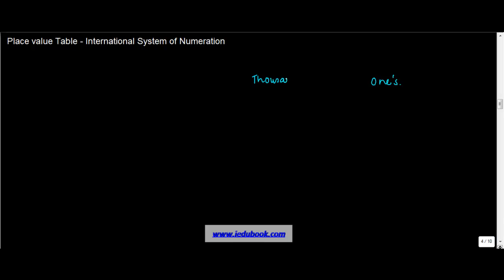It has thousands. Now, unlike lakhs which we saw under the Hindu-Arabic system, the international system of numeration, which is followed in most countries in the world, has millions. And after millions it has billions. So we had lakhs and crores in the Hindu-Arabic system, whereas in the international system you have millions and billions.